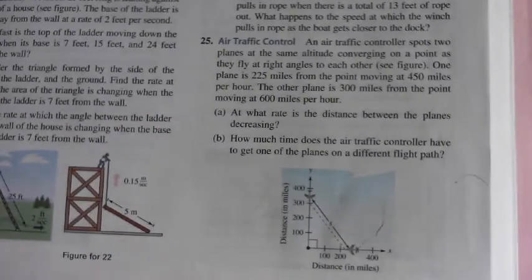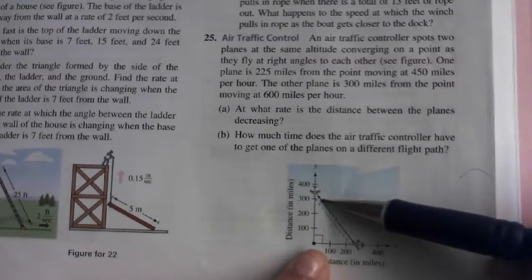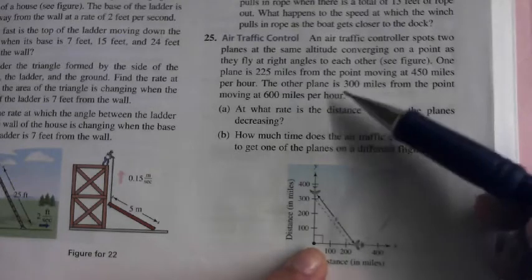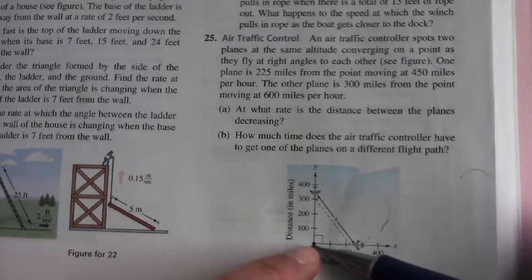25B is really not even a related rates question. This guy that's 300 miles away and traveling at 600 miles per hour, it'll take him a half an hour to get to that point, right?